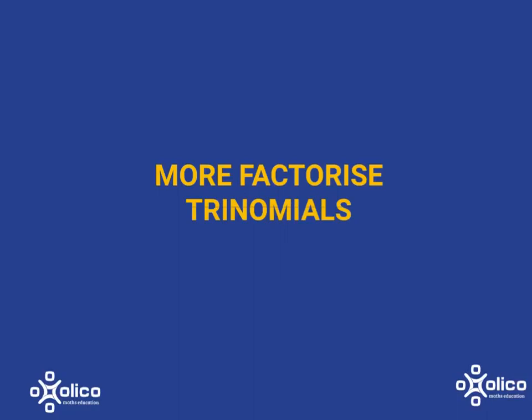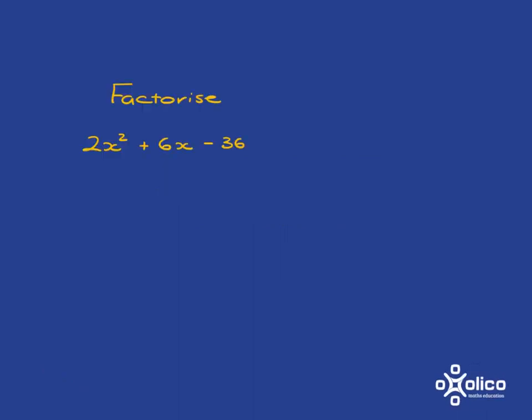Let's have a look at a couple more examples of factorising trinomials. If you're asked to factorise -2x² + 6x - 36,